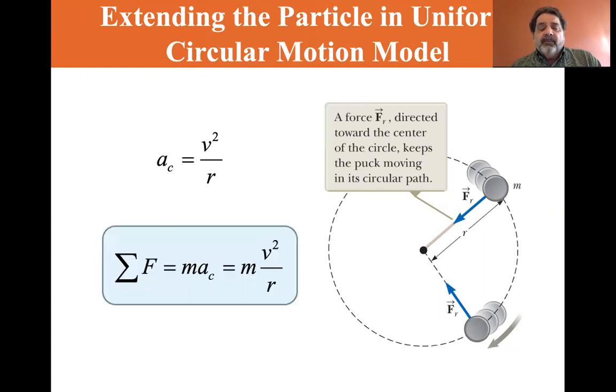We know from Newton's second law that the sum of the forces equals mass times acceleration. In this case, the mass times the centripetal acceleration is equal to the mass times v squared over r. The centripetal acceleration is equal to v squared over r, then ma is equal to m times v squared over r.